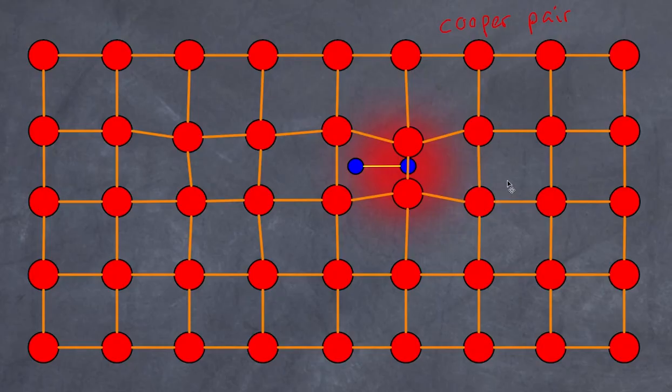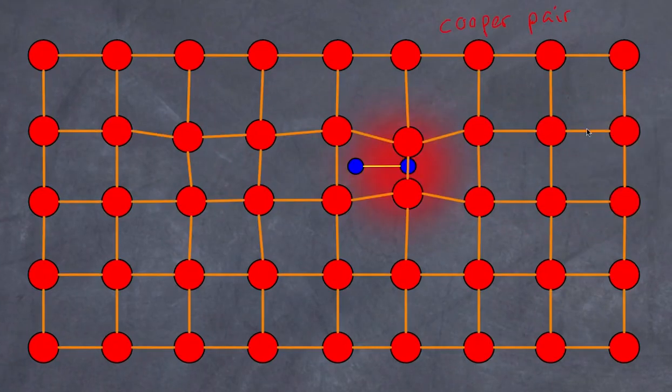Here is a quick animation to show you the net effect. Hopefully that gives you an understanding of the BCS theory. Thanks for watching, bye for now.